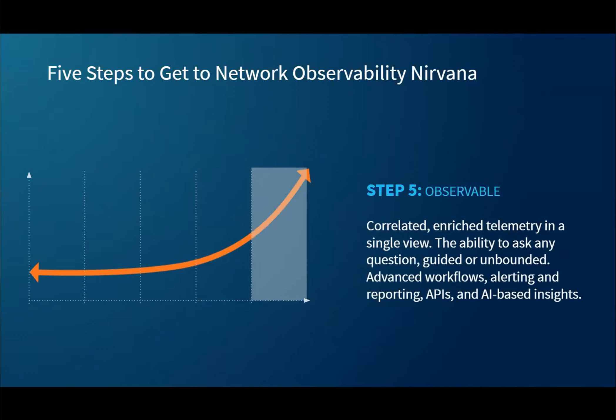And so that's what you look for in step five — observable. It's correlated and enriched telemetry in a single view, the ability to ask any question — guided or unbounded through a concept like Data Explorer — advanced workflows, learning, reporting, APIs, and AI-based insights. All of this should be delivered in a SaaS form factor so you and your company don't have to worry about installing, upgrading, and maintaining the system, which is always a big tax.